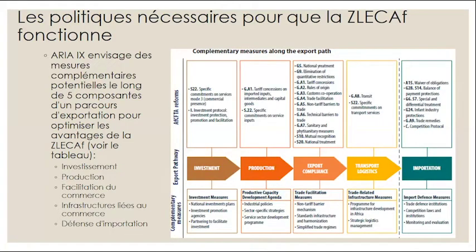Parlons maintenant des politiques nécessaires pour que la ZLECAF fonctionne. Le rapport ARIA-9 propose une taxonomie de mesures complémentaires pour optimiser les avantages de la ZLECAF. Il le fait à travers le prisme d'une voie d'exportation, comme le montre le graphique sur la diapositive. Le parcours d'exportation est composé de cinq composantes : l'investissement, la production, la facilitation du commerce, les infrastructures liées au commerce, et la défense des importations.